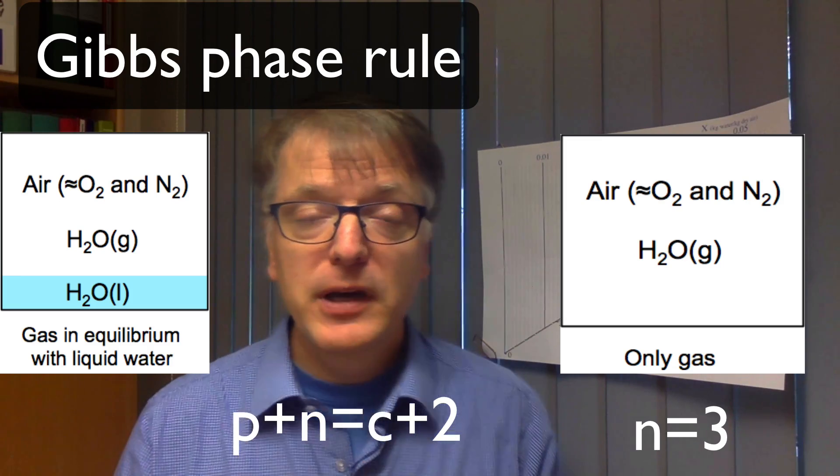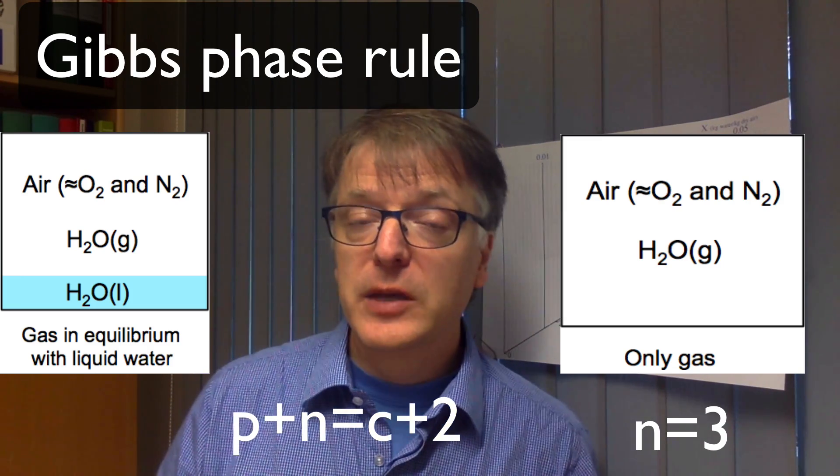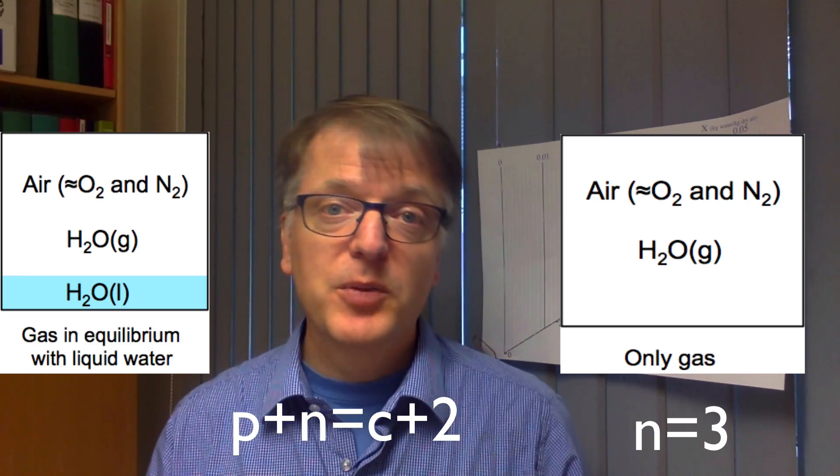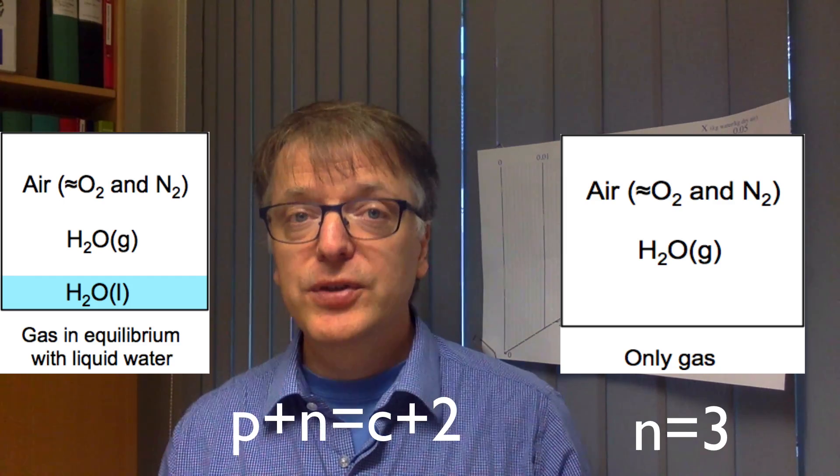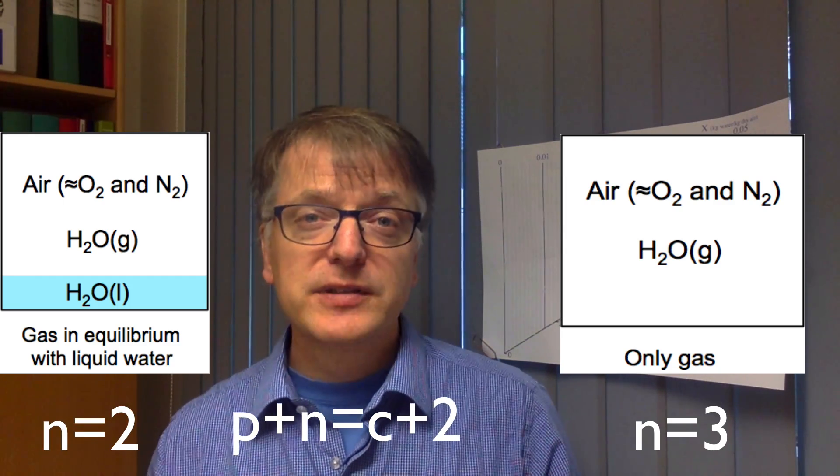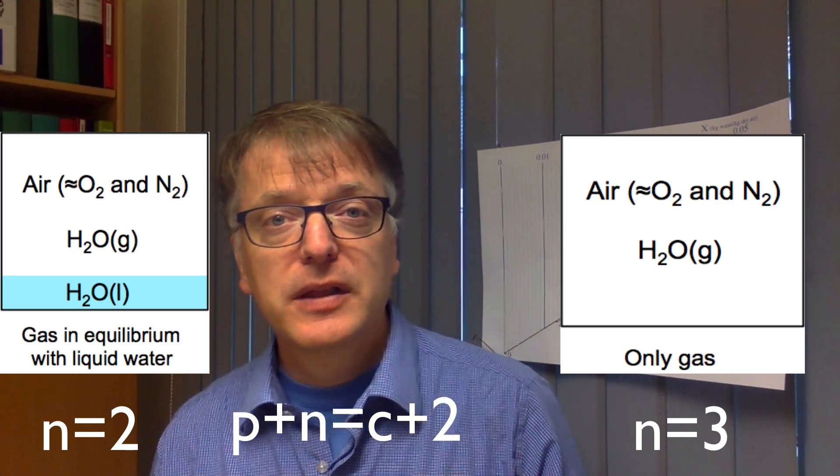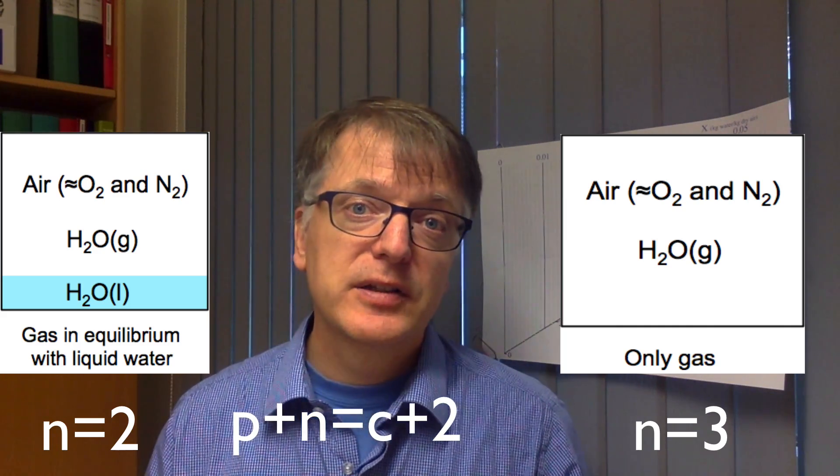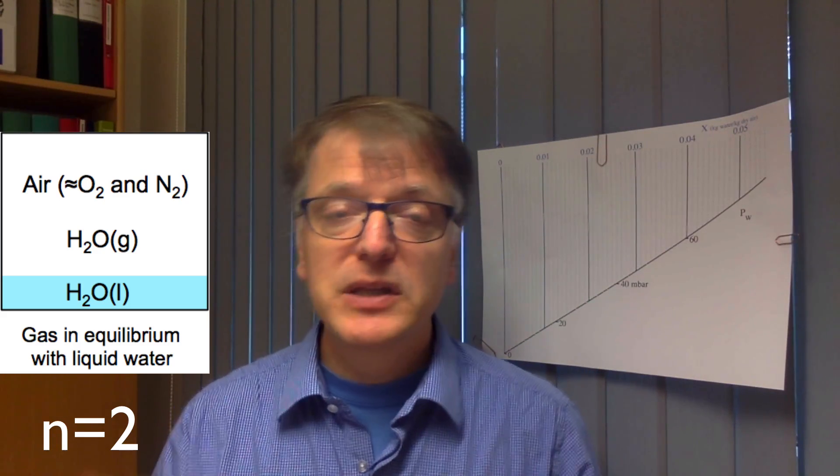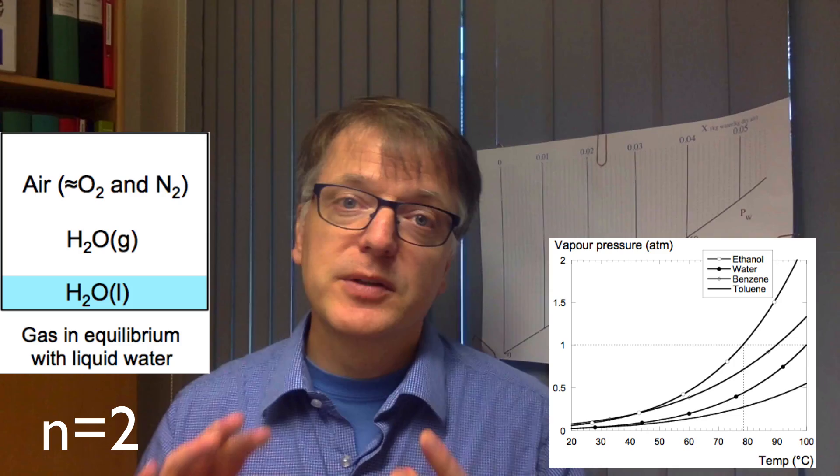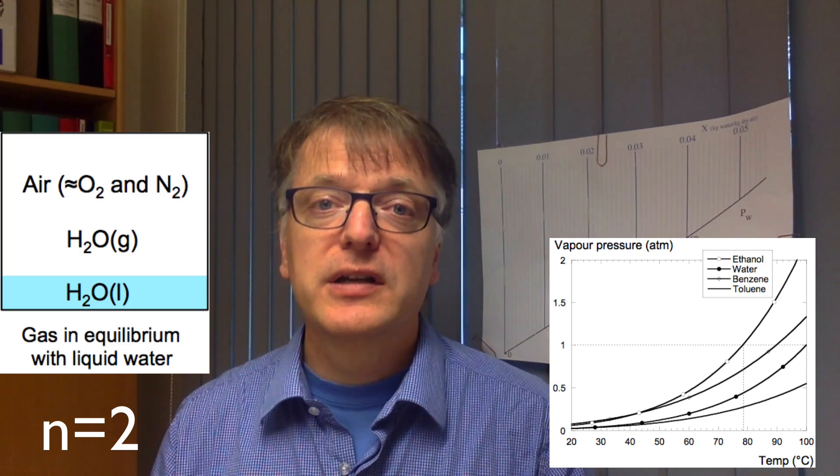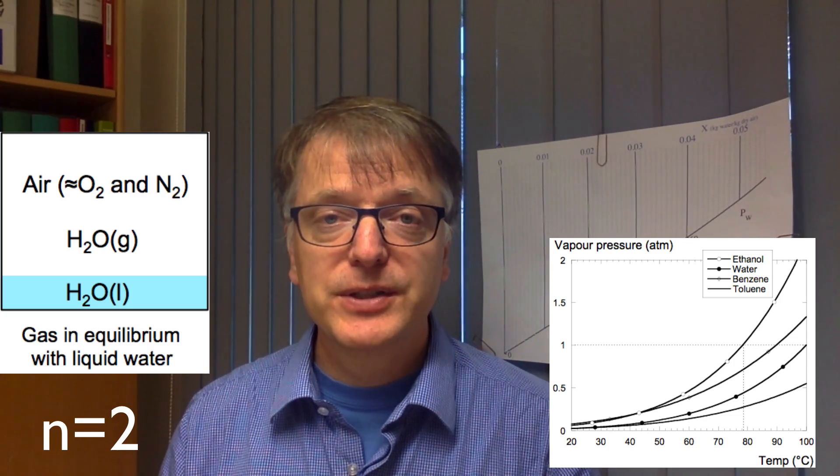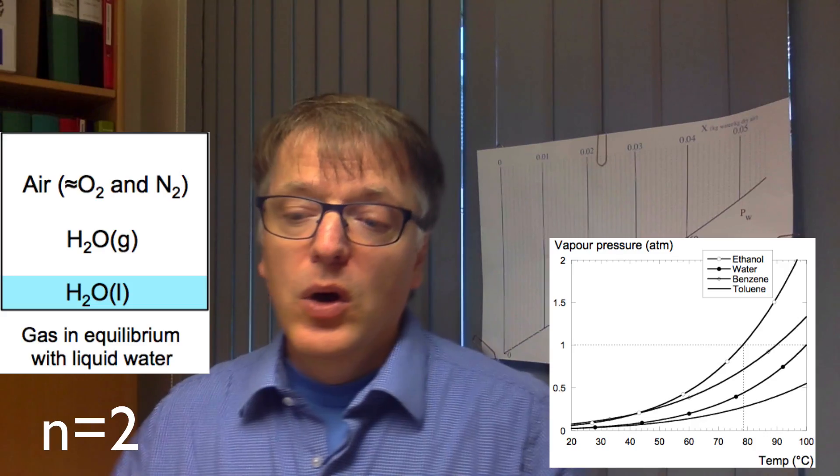Now, if you have air and liquid water, so air in equilibrium with liquid water, you only have two degrees of freedom. What does that mean? Well, that means that the vapor pressure curve describes the system. You must be on the vapor pressure curve because the partial pressure of water in the air is exactly the vapor pressure.